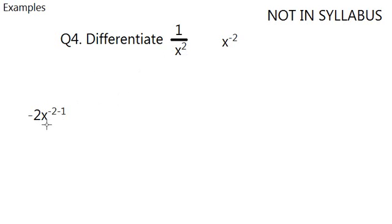Actually you added a number instead of minus, so you actually messed the question up quite a lot. The answer to that would be minus 2x to the power of negative 3, which in fraction form looks like this. Not particularly beautiful but yeah, this is not in the syllabus so if you want to ignore it, by all means do so.